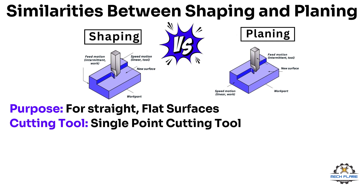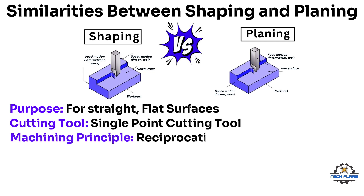Cutting tool: Both use single-point cutting tools. Machining principle: In both operations, material is removed by the cutting tool in a reciprocating motion, which produces a flat surface.